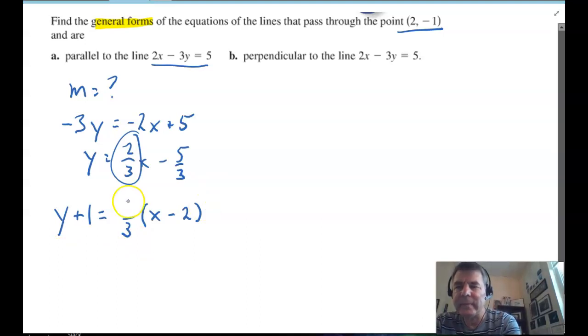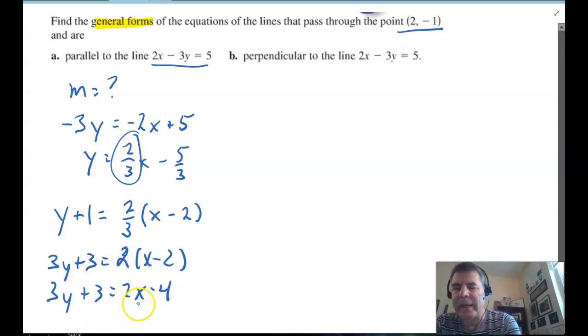So, let's go back. Positive 2 3rds. There we go. Now, I'm going to multiply by 3. And that's going to give me 2 times x minus 2. 3y plus 3 equals 2x minus 4. And I'm going to subtract 2x. I've already got the 3y right there. And I'm going to add 4 to both sides. And there's the general form of the line parallel.